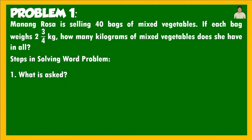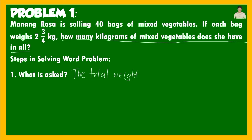Here are the steps in solving a word problem. First: What is asked? We need to know what the problem is asking us to provide or answer. So our 'what is asked' is: how many kilograms of mixed vegetables does she have in all? Or we can write: the total weight of the mixed vegetables.